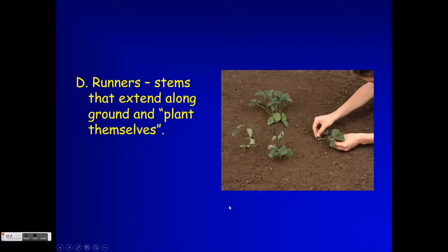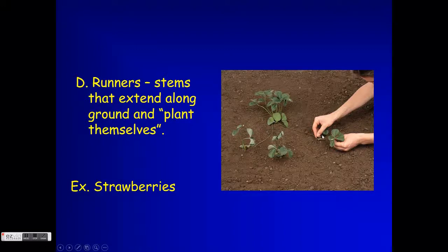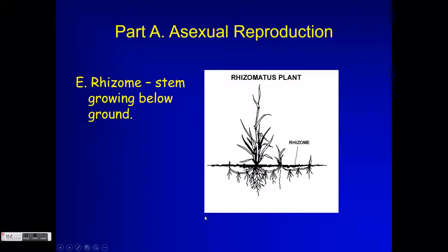One type that happens naturally is called runners, shown here with strawberries. Runners are little stems that grow along the ground, and when they make contact with the ground they form root systems and a whole new plant — genetically identical to the original. In strawberry farming, workers have to pick up these runner plants and place them back in the row so that the patch grows in an orderly way for people to come by and pick strawberries.